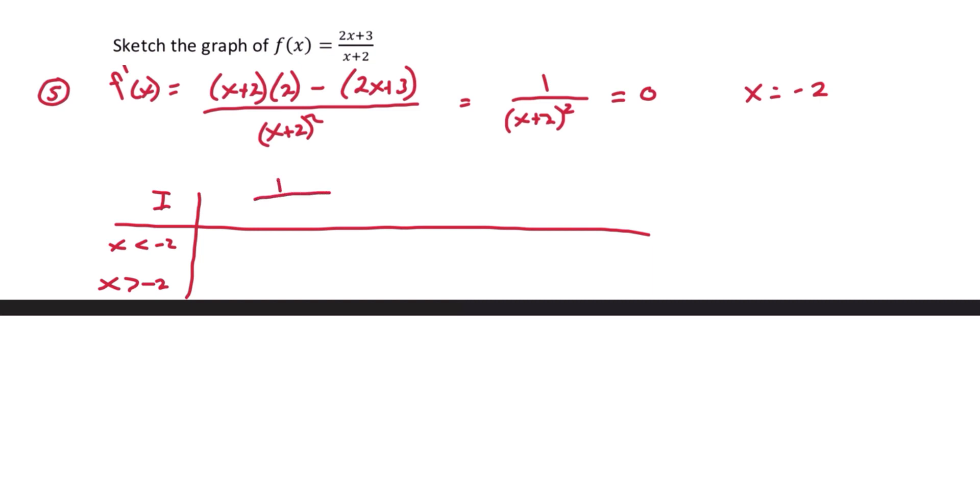We'll look at f prime and what that's going to tell us about f. So we're positive in both intervals, which means f is increasing on both intervals. And since there's no change from increasing to decreasing, step 6, we can say that we have no local maxes or mins.